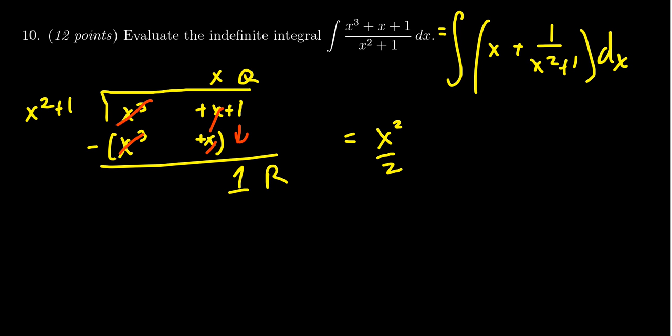The antiderivative of 1 over x squared plus 1, that's the derivative of arctangent. So the antiderivative is going to be arctangent of x. If you didn't remember that, that's one you ought to know.